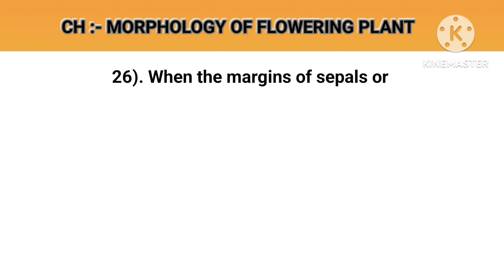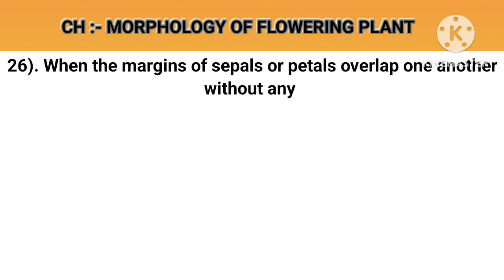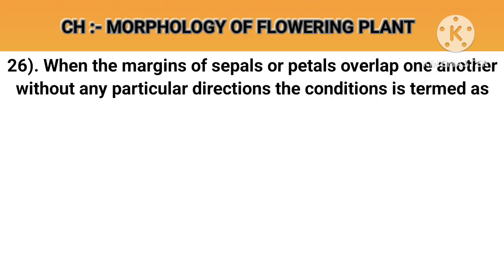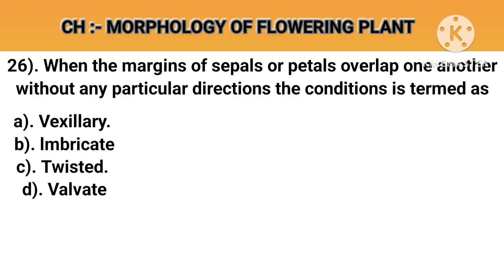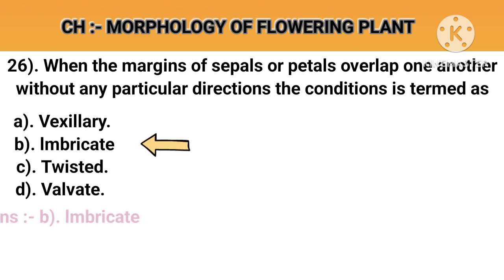Question number 26. When the margin of sepals or petals overlap one another without any particular direction, the condition is termed as. Option A: Vexillary. Option B: Imbricate. Option C: Twisted. Option D: Valvate. Answer B: Imbricate.